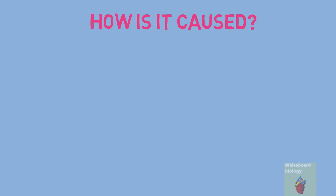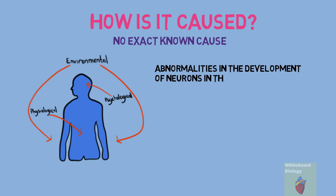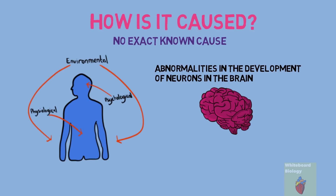So how is schizophrenia caused? There is no exact known cause, but there are risk factors. It may be due to a combination of genetic predisposition, environmental factors, and social and psychological factors. This can lead to abnormalities in the development of the neurons in the brain, leading to brain dysfunction due to an improper balance of chemicals.